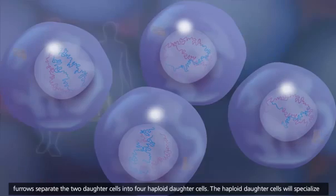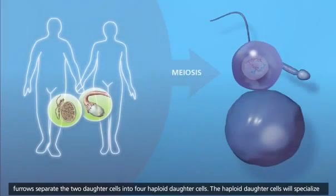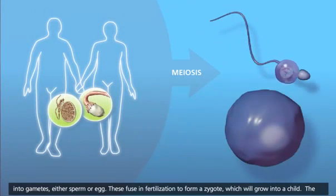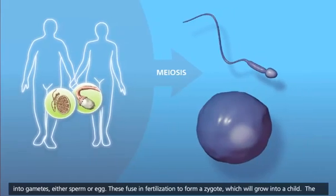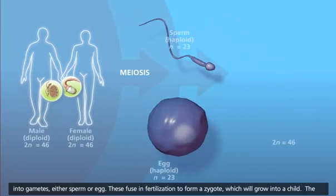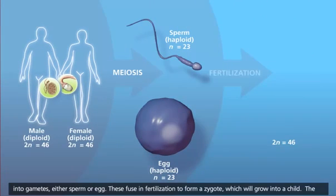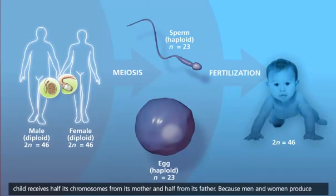Cytokinesis occurs and cleavage furrows separate the two daughter cells into four haploid daughter cells. The haploid daughter cells will specialize into gametes, either sperm or egg. These fuse in fertilization to form a zygote, which will grow into a child. The child receives half its chromosomes from its mother and half from its father.